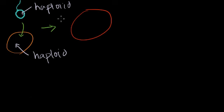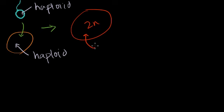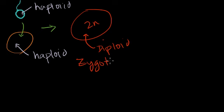You now have a diploid zygote with a 2n complement of DNA material — the full complement of what a normal cell in our human body would have. So this is diploid, and it's a zygote, which is just a fancy way of saying the fertilized egg. And it's now ready to essentially turn into an organism.